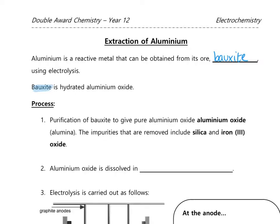You need to know the process of extraction of aluminium, which is essentially an electrolysis extraction. The first step is that the bauxite is purified to give pure aluminium oxide — sometimes called alumina. The impurities removed are silica and iron(III) oxide. This purification happens before it goes into the electrochemical cell to avoid impurities entering the cell.